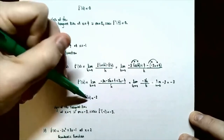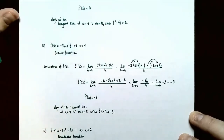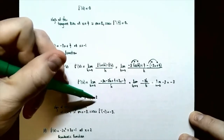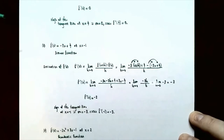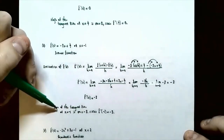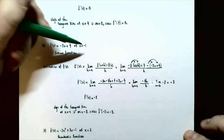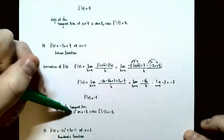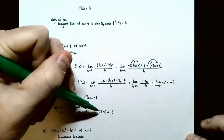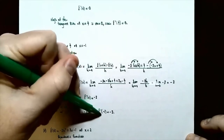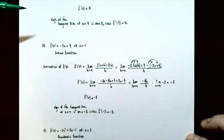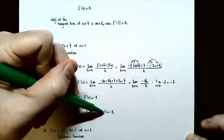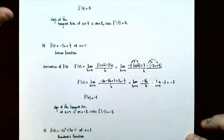The derivative, or slope of the tangent line, is negative 3 no matter what x is, because there is no x in the derivative. So to find the slope at x equals negative 1, plug negative 1 into the derivative. F prime of negative 1 is always negative 3 — there's nothing to substitute. So the slope of the tangent line for this function at x equals negative 1 is negative 3.